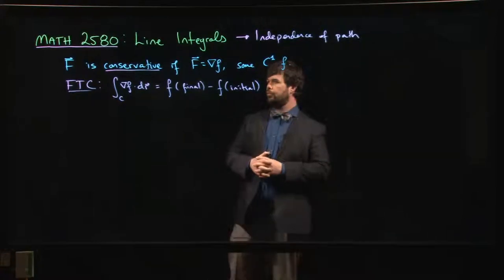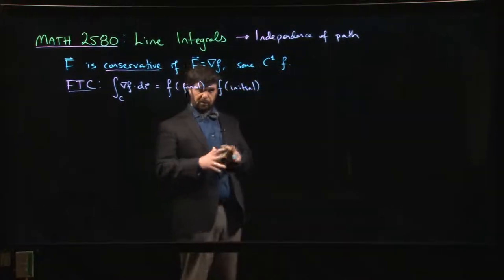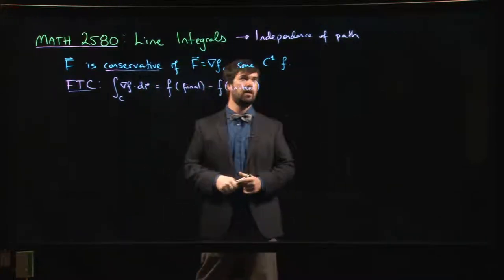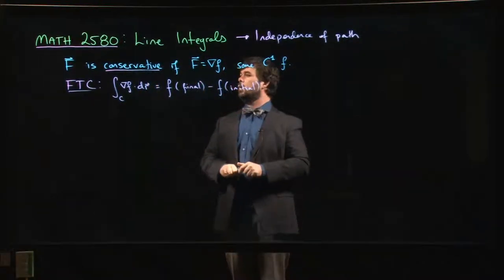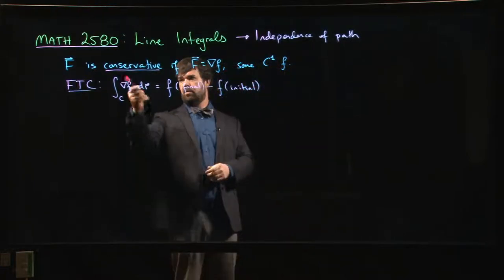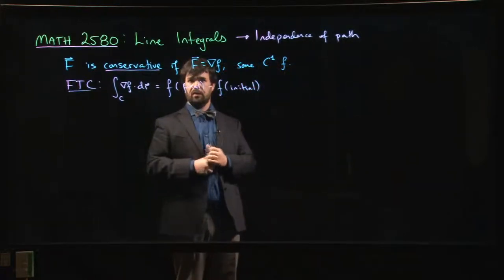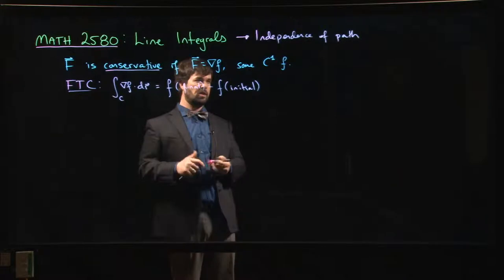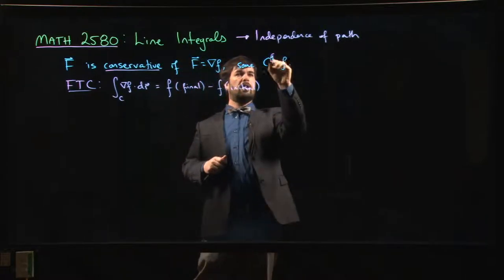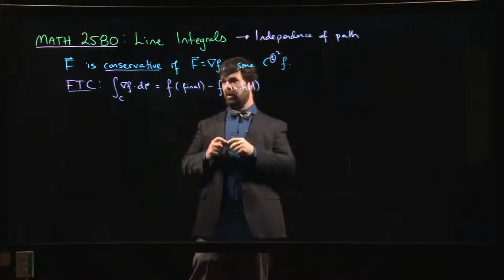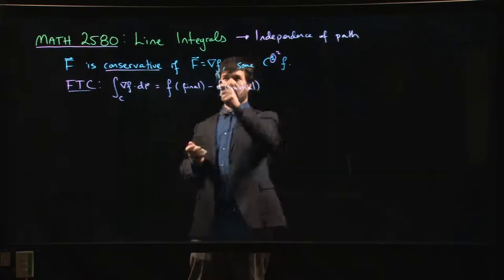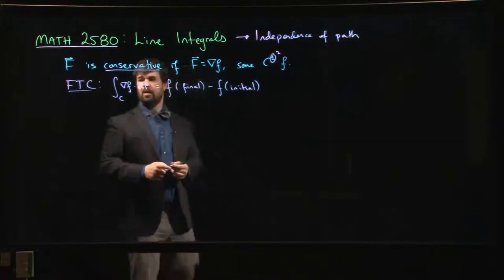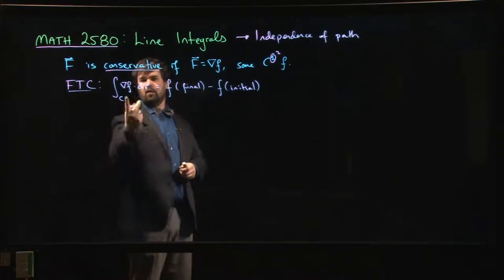In this video we're going to do a roundup of some theorems relating to the notion of conservative vector fields and independence of path. A vector field is conservative if it's the gradient of some function. We want our vector field to be at least C1, and probably C2, so that we know the curl is going to vanish — the curl of the gradient is zero for a C2 function.